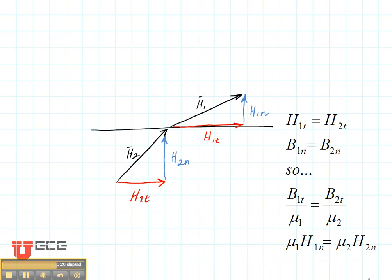Now let's look at the magnetic field. Similarly, the magnetic field will have a boundary condition on its tangential component and another boundary condition on its normal component.